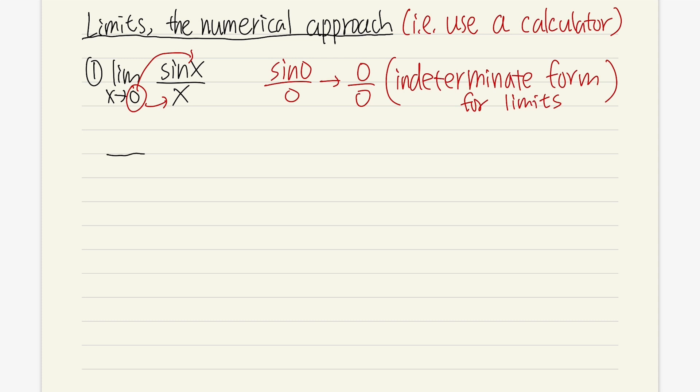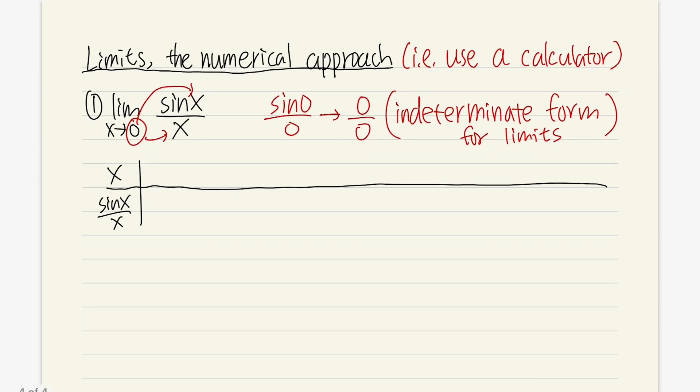0 over 0 is an indeterminate form, and this is for limits. What that means is that we just have to do more work in order to figure out what the answer should be. And now, let's make some observations. No graphs, just some values and see what happens. So, let's make two rows.